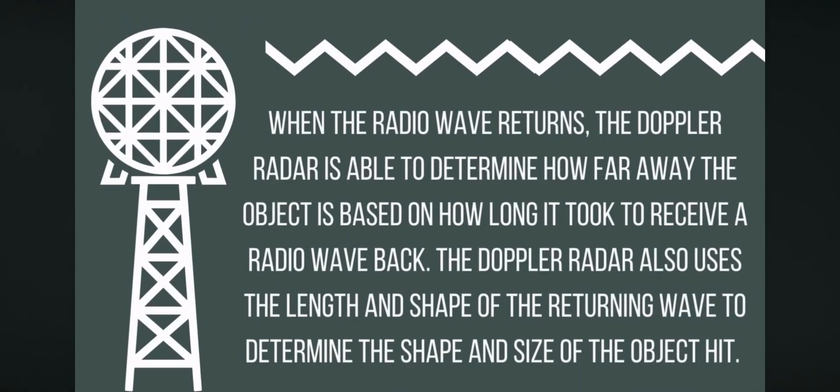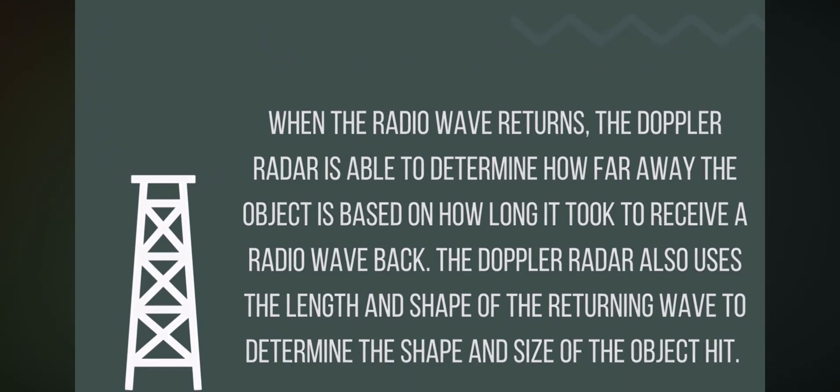When the radio wave returns, the Doppler radar is able to determine how far away the object is based on how long it took to receive a radio wave back. The Doppler radar also uses the length and shape of the returning wave to determine the shape and size of the object hit.